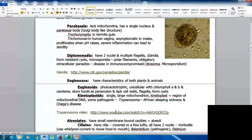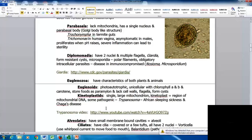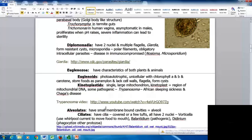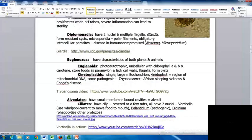The Euglenozoa have characteristics of both plants and animals. Euglenoids are photoautotrophic, unicellular with chlorophyll A and B and carotene. They store food as paramylon, lack cell walls, have flagella, and form cysts. The kinetoplasts have a single large mitochondrion. The kinetoplast is the region of mitochondrial DNA. Some are pathogens like Trypanosoma that causes African sleeping sickness and Chagas disease. Here's a video clip on trypanosomas.